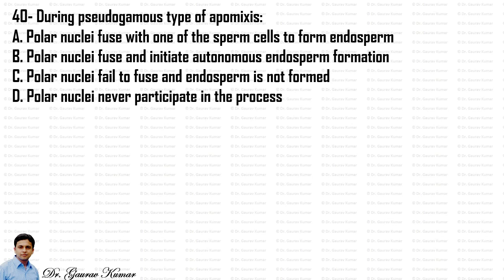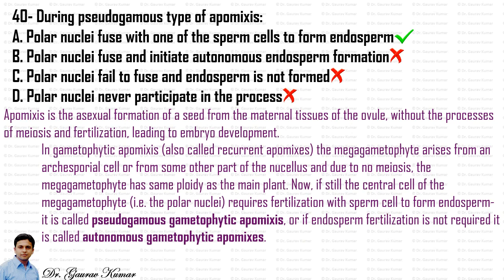During pseudogamous type of apomixis, polar nuclei fuse with one of the sperm cells to form endosperm. Apomixis is the asexual formation of a seed from the maternal tissue of the ovule without meiosis and fertilization, leading to embryo development. In gametophytic apomixis, also called recurrent apomixis, the megagametophyte arises from an archesporial cell or from some other part of the nucellus. Due to no meiosis, the megagametophyte has the same ploidy as the main plant. If the central cell of the megagametophyte — the polar nuclei — still requires fertilization with a sperm cell to form endosperm, it is called pseudogamous gametophytic apomixis.